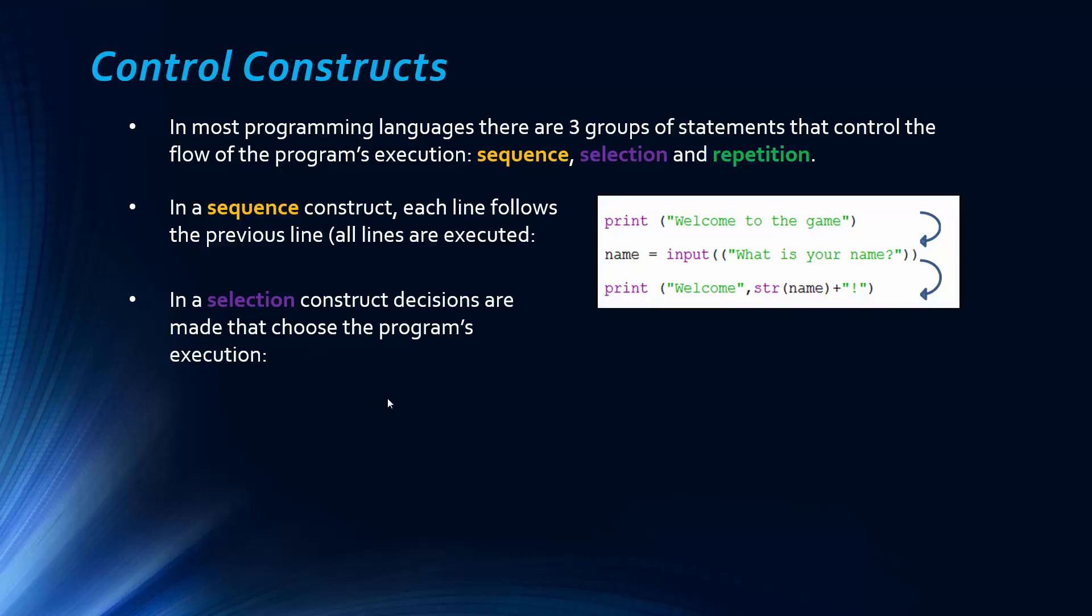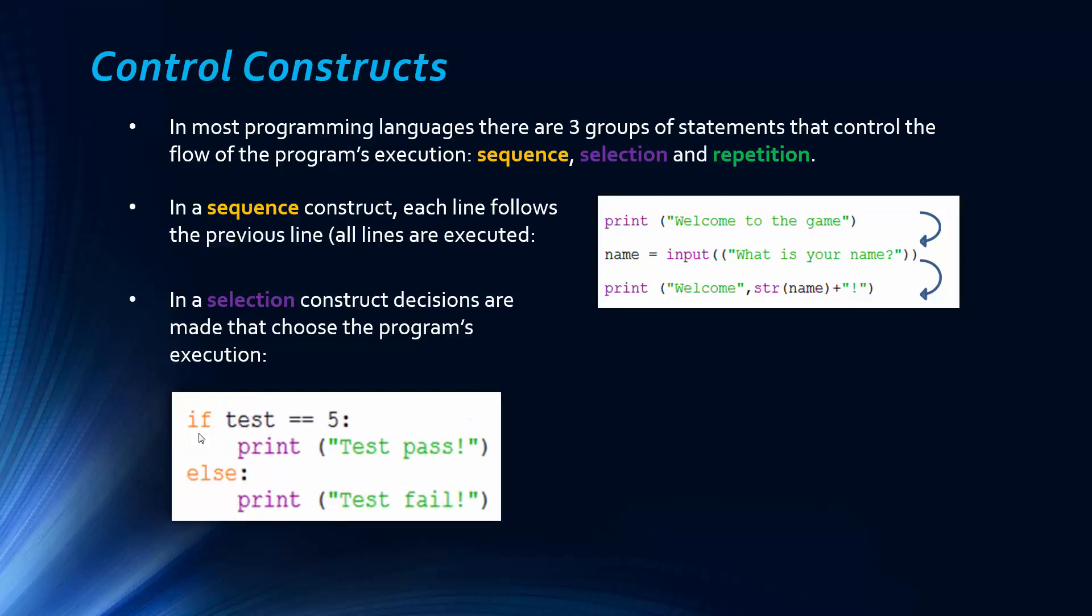And in selection construct, decisions are made that choose the program's execution. So the flow is kind of chosen based on the conditions, so what we were just looking at. So test is equal to 5 is our condition here. And this would be evaluated. So if this is true, this evaluator is true, print test pass is executed. Otherwise, if it's false, test fail is printed.